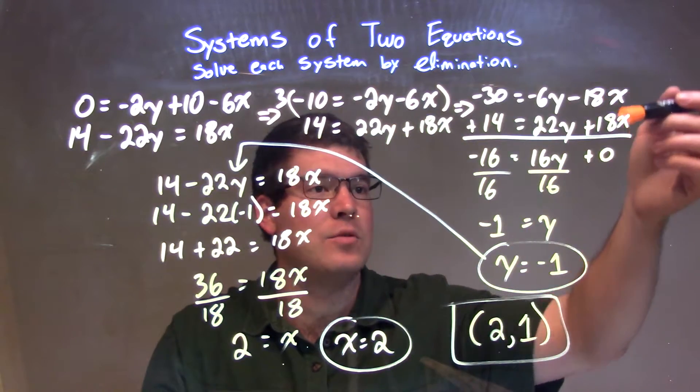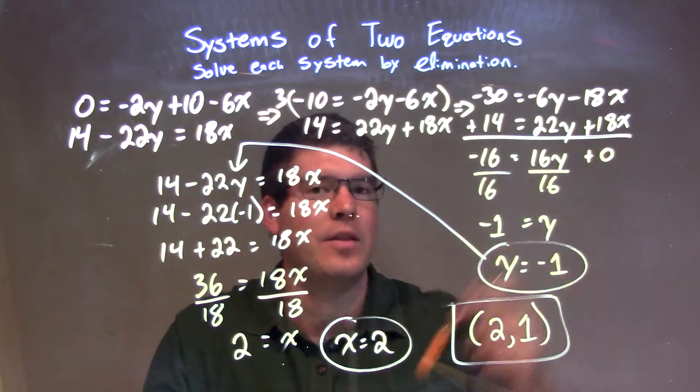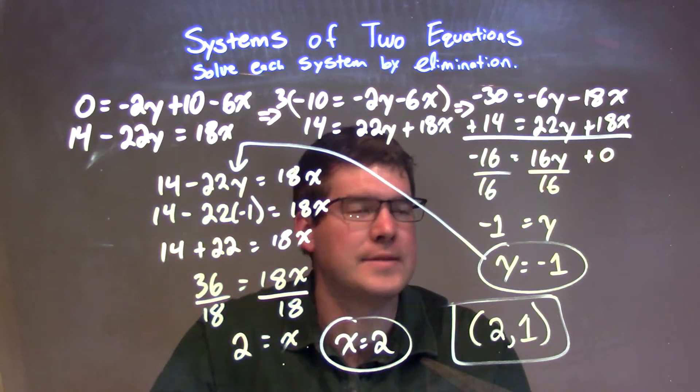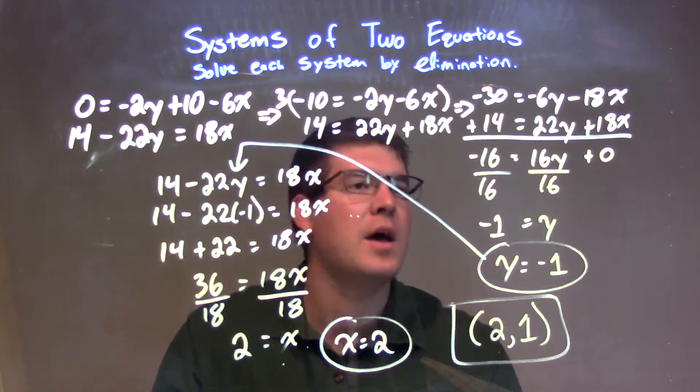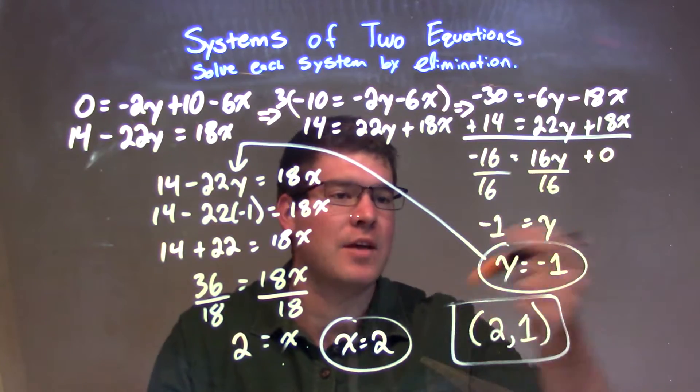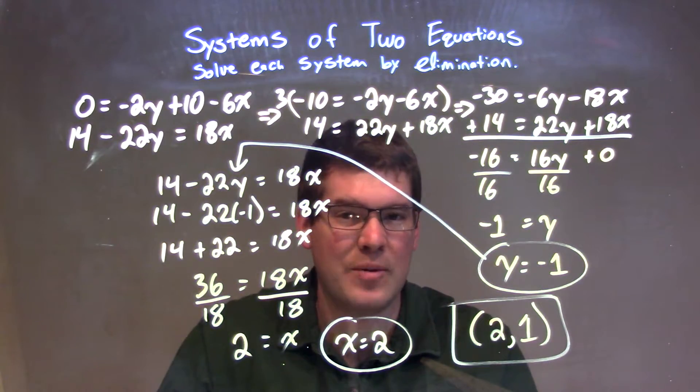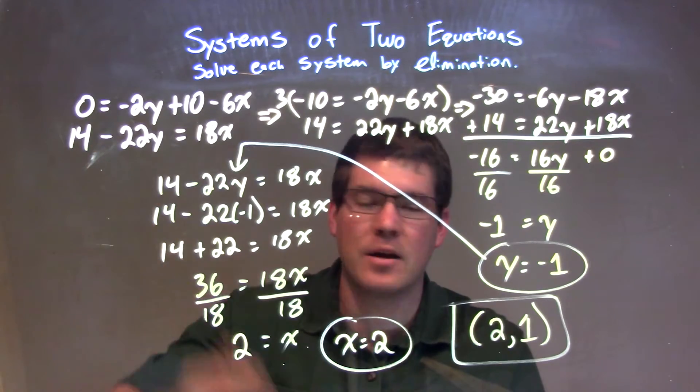After I did that, I added the two equations together, which eliminated the variable x. That was the whole point—that's elimination. And then divided by 16 on both sides, giving me y by itself to be negative 1.